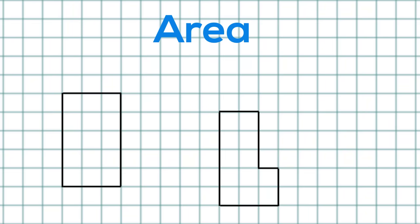Let's calculate the area of some other shapes. If we overlay a grid it makes it easy to calculate. By counting we can see that the area of the first shape is 15 squares and the area of the second shape is 12 squares.